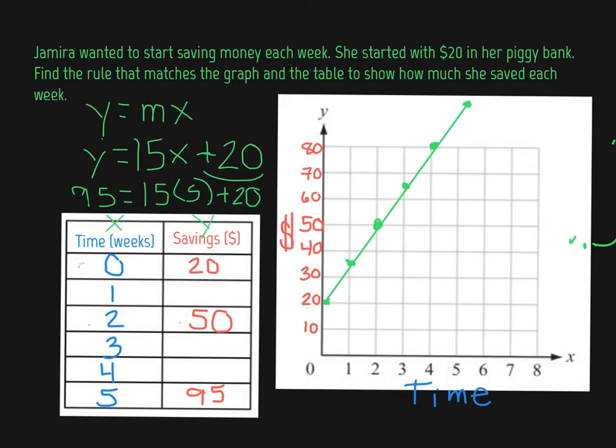So let's fill in our missing numbers now so that we can complete our table with our rule. So now we're going to try to figure out what is exactly y. So we're looking for this here. So we don't know what it is, but we do know x. So 15 times 1 plus 20. 15 times 1 is 15 plus 20 would give us 35.